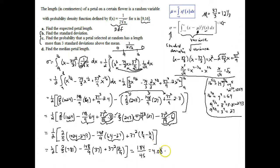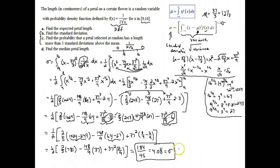So the variance is 184 over 45, or approximately 4.08 repeating (the 8 repeating). That number is the variance — and so the standard deviation is the square root of that. That answers Part B.